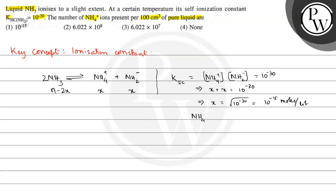The concentration of NH4+ ions is equal to 10 raised to the power minus 15 molar. Now, in 100 centimeter cube of pure liquid, we need to find out how many ammonium ions are present.